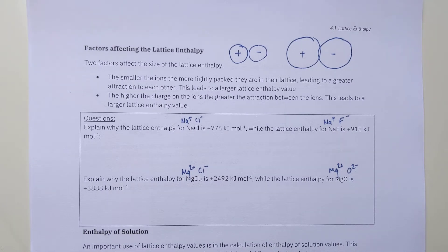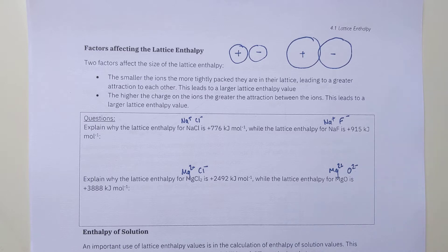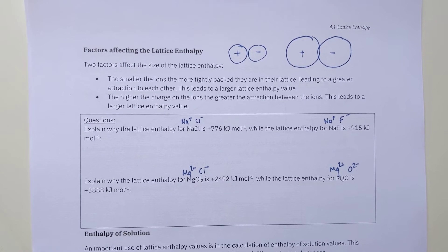Having looked at all those different examples of Born-Haber cycles, the last bit in your notes specific to lattice enthalpy is on top of page seven. We've got some theory questions about values of lattice enthalpies. We've talked about the idea that lattice enthalpies are generally endothermic because it requires you to put energy in to break the lattice apart into separate gaseous ions, and generally the values are quite large. This section is about comparing the values of lattice enthalpies between different ionic compounds and explaining why some values might be bigger than others. We've got two factors to consider.